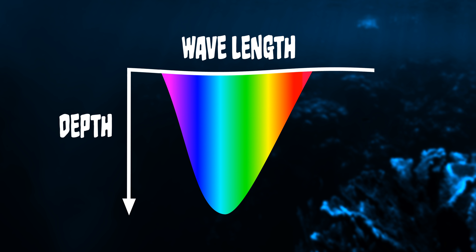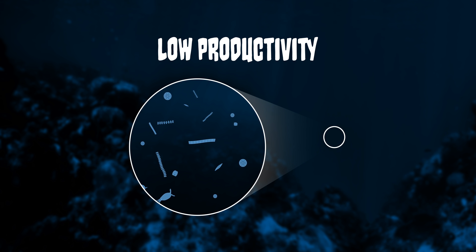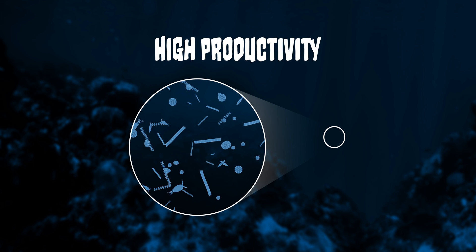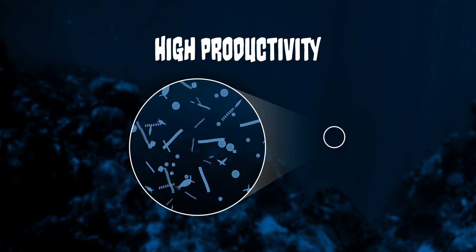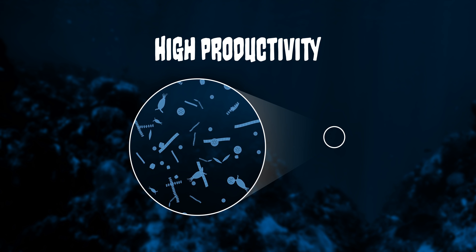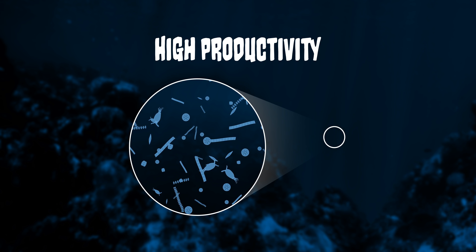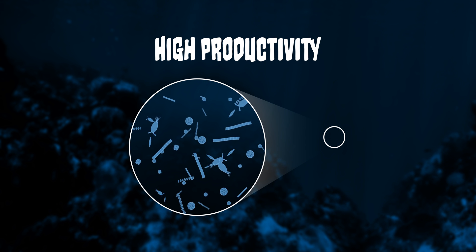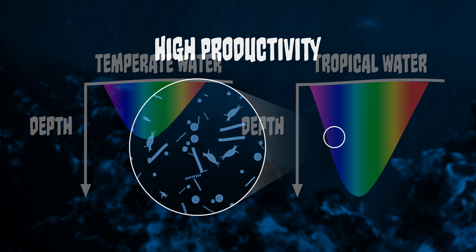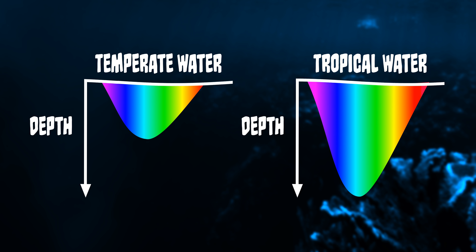This process also explains why tropical waters are a very different color blue than more temperate waters. Tropical waters have very low productivity whereas temperate waters have very high productivity, meaning there's a lot of dissolved organic matter as well as plankton in temperate waters. These give the light a lot more particles to hit and be absorbed by, so the light gets attenuated a lot more quickly in temperate waters than in tropical waters.